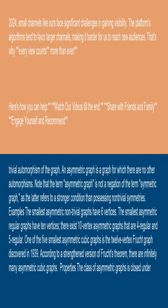Examples: the smallest asymmetric non-trivial graphs have six vertices. The smallest asymmetric regular graphs have ten vertices. There exist ten-vertex asymmetric graphs that are four-regular and five-regular. One of the five smallest asymmetric cubic graphs is the twelve-vertex Frisch graph discovered in 1939. According to a strengthened version of Frisch's theorem, there are infinitely many asymmetric cubic graphs.